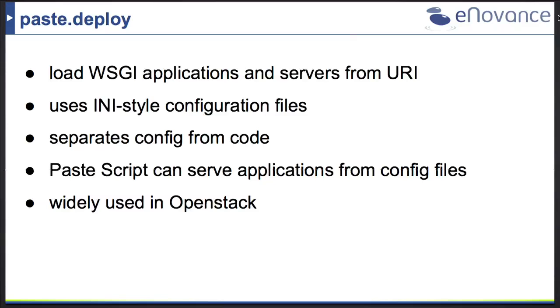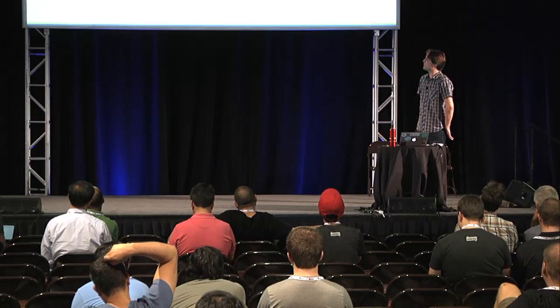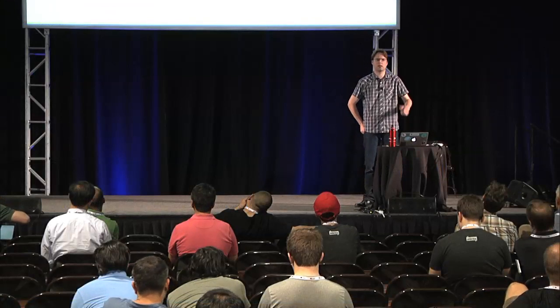If you want to deploy your middleware, especially for Swift, you don't want configuration code inside your Python files. There's a nice package called paste.deploy that loads WSGI applications and servers from a URI like a Python egg, using an INI configuration file. This lets you separate your code from your configuration. Paste.script can serve your application directly from the configuration file. Paste.deploy is widely used in OpenStack — in Swift, Nova, Keystone, Glance, and more.